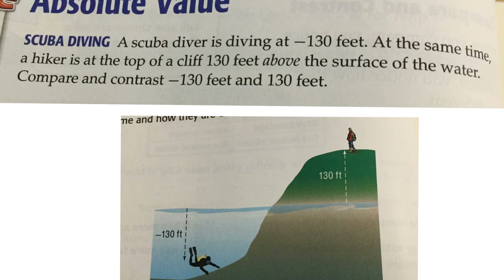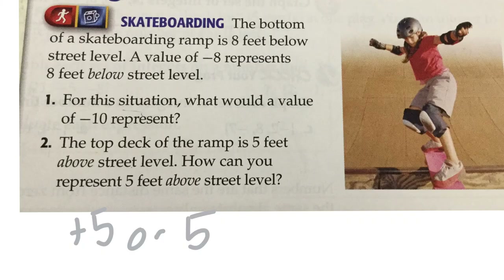But that is not what we are focusing on today. Both the hiker and the diver are the same distance from the surface of the water — the hiker is above it and the diver is below it. The bottom of a skateboarding ramp is 8 feet below street level. A value of negative 8 represents 8 feet below street level. For this situation, what would a value of negative 10 represent?